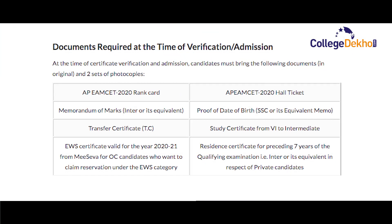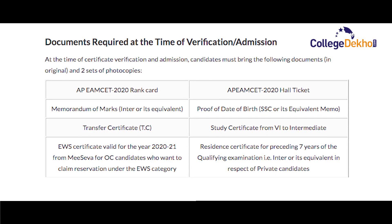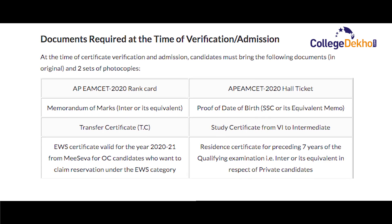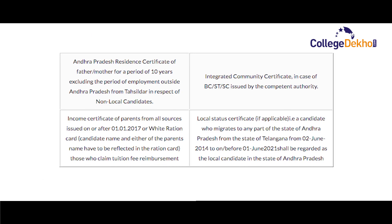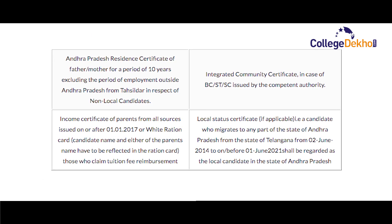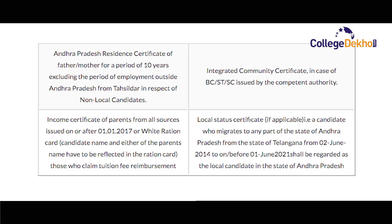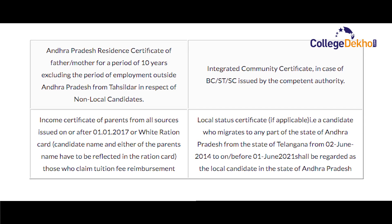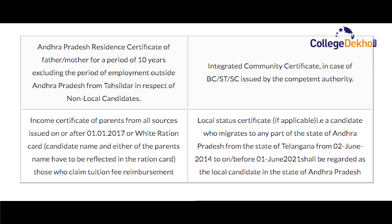The documents required at the time of verification are: AP MCAT rank card, AP MCAT hall ticket, intermediate mark sheet, class 10th mark sheet, transfer certificate, study certificate from 6th to intermediate, EWS certificate valid for academic session 2020-21, residence certificate for non-resident candidates whose parents are residents of Andhra but completed studies in other states, and income certificate for candidates who fall under the below-income category.